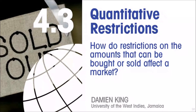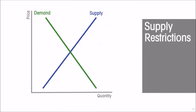We want to talk about quotas and other quantitative restrictions in a market — how do quantitative restrictions, restrictions on the amounts that can be bought or sold, affect the market? Let us look first at restrictions on supply. Let us say that some kind of supply restriction is put in place at a quantity that is less than would have been bought and sold in a free market.